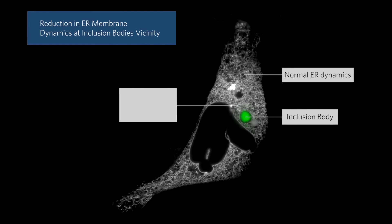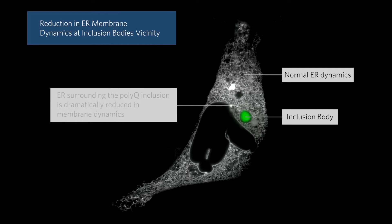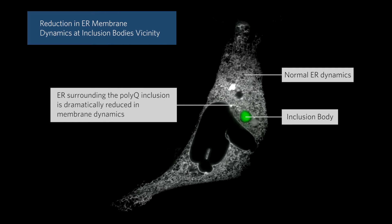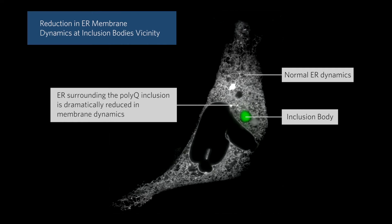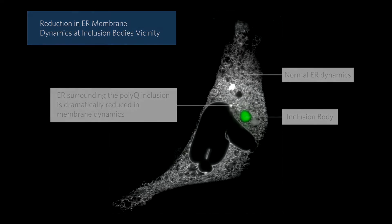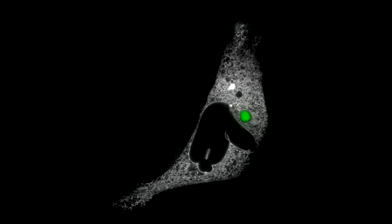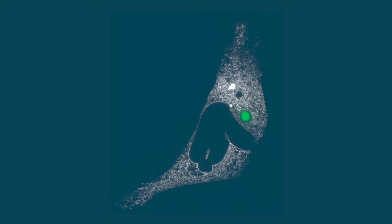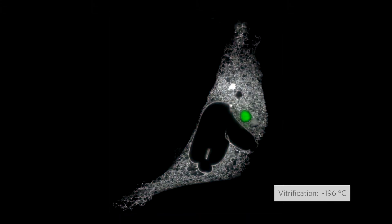To better understand these interactions, we used advanced electron microscopy technology that we have recently developed. The cells are rapidly frozen to ensure that they are preserved in glass-like vitreous ice, avoiding the damaging formation of ice crystals.